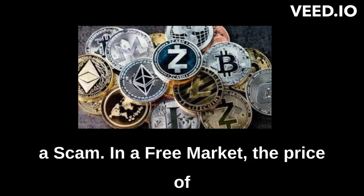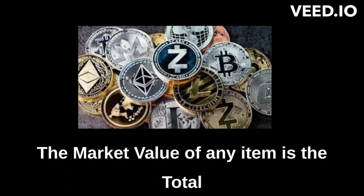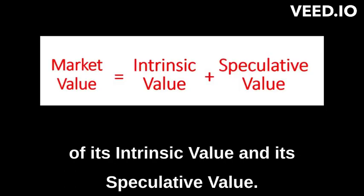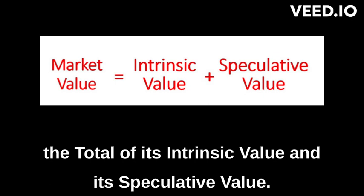In a free market, the price of an item will be equal to its market value. The market value of any item is the total of its intrinsic value and its speculative value. Let me repeat that: the market value of any item is the total of its intrinsic value and its speculative value.